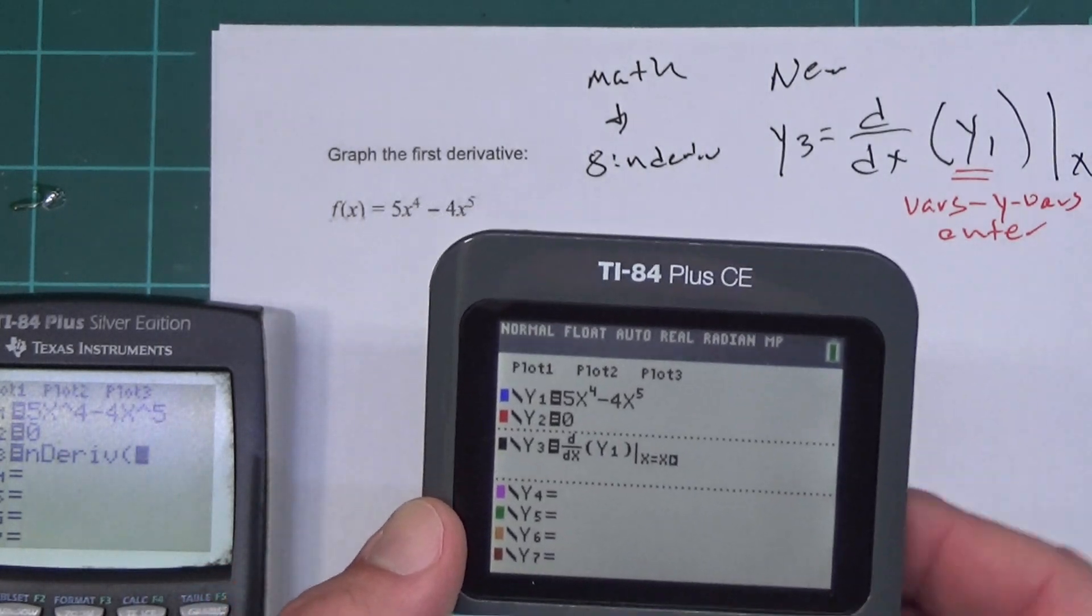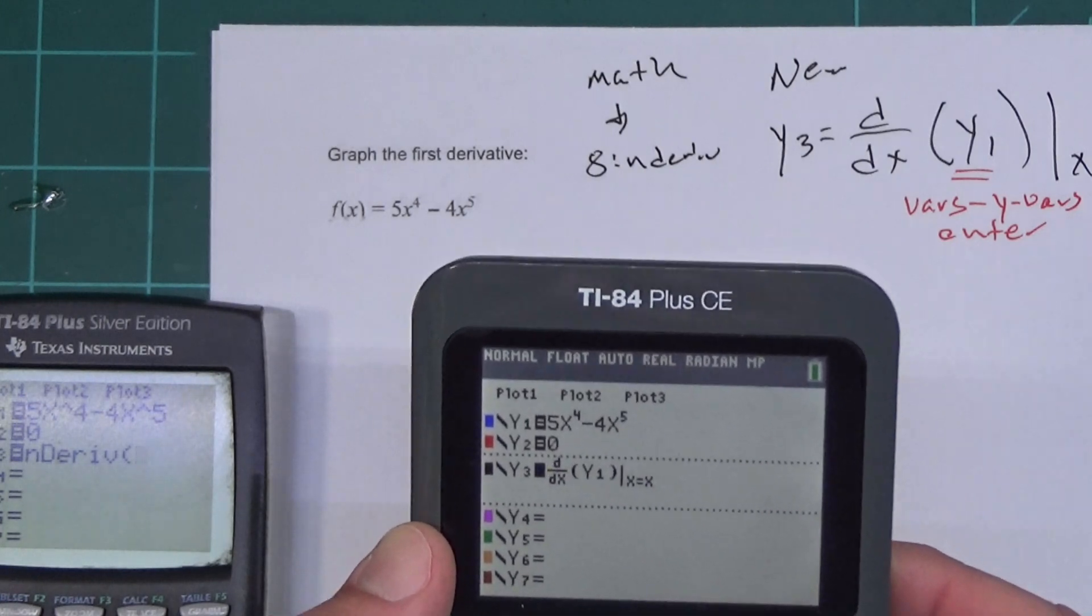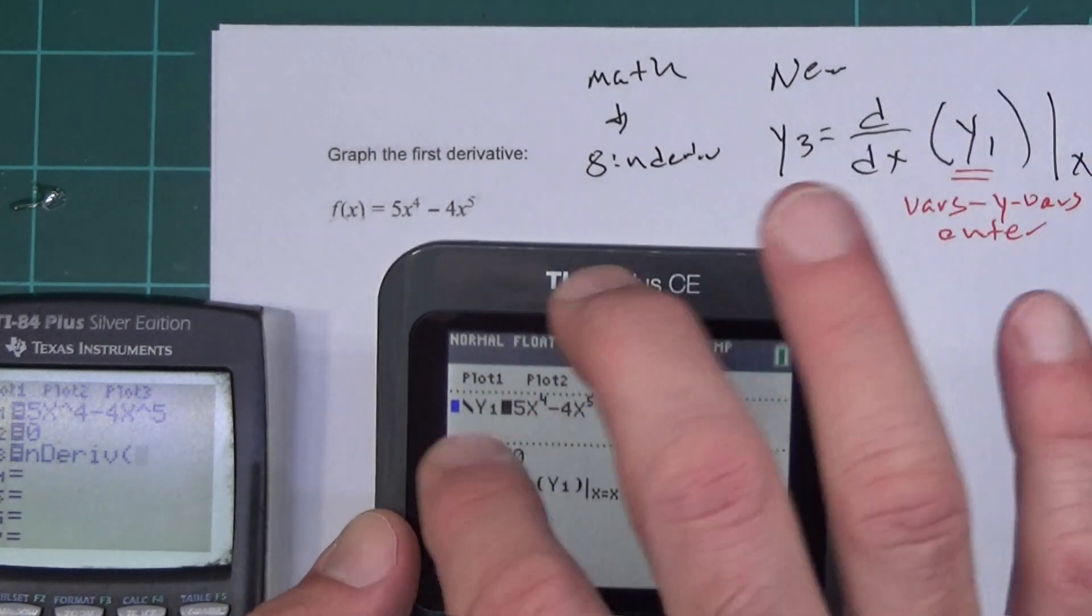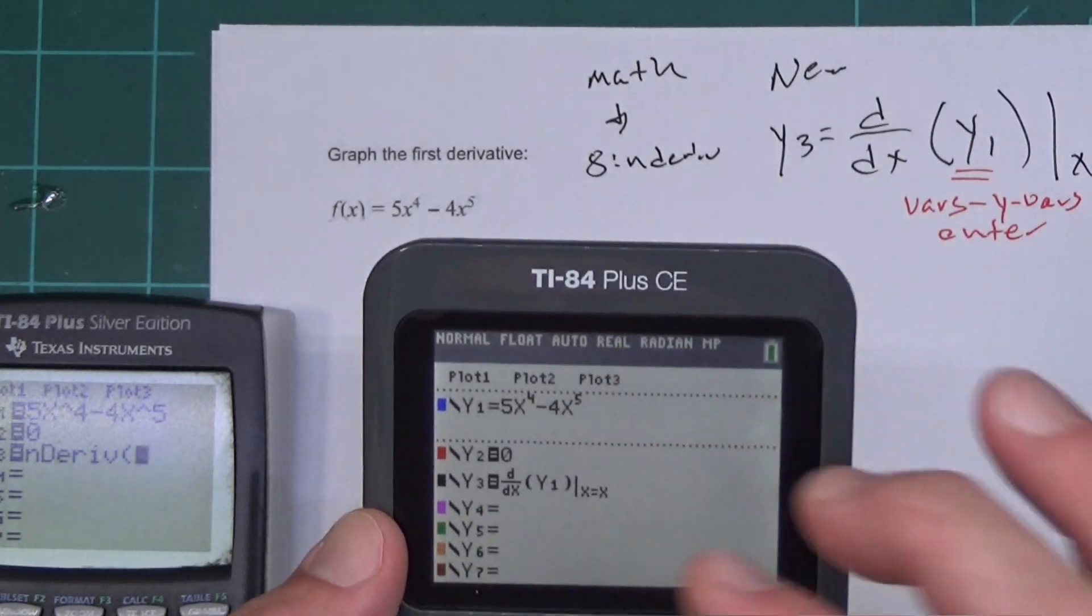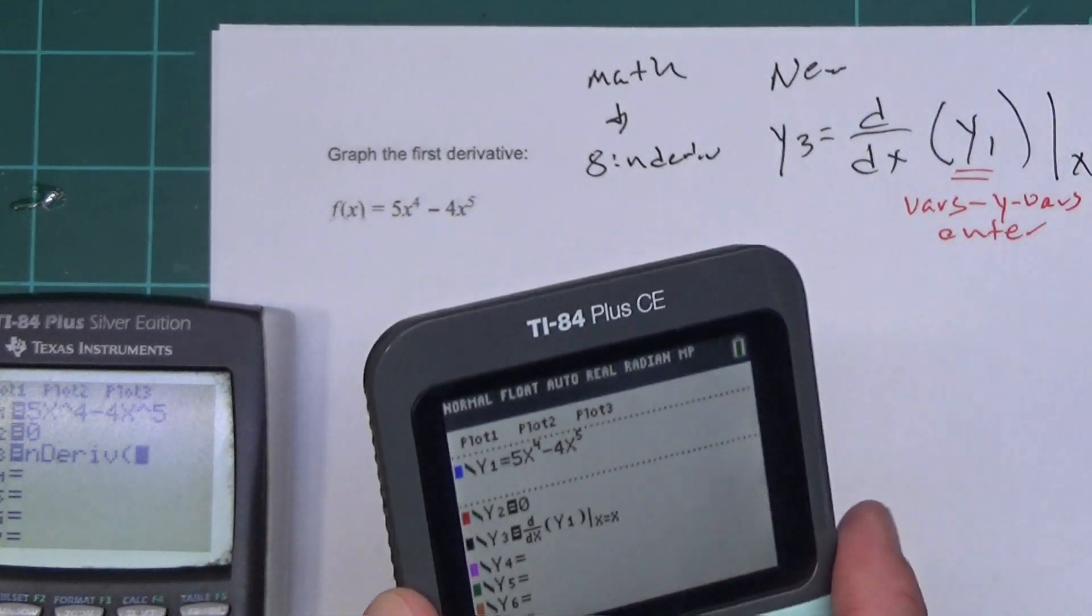So that's set up for graphing. And the next thing I want to do is get the box off the y1. Because I don't want to graph that. I only want to graph the derivative. So there we go. We got it set up to graph my derivative.